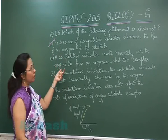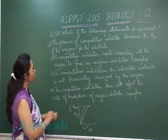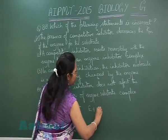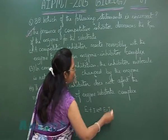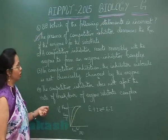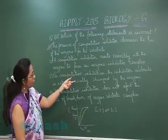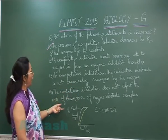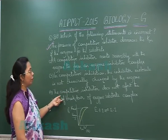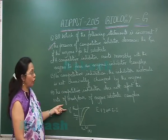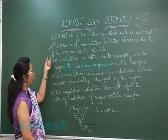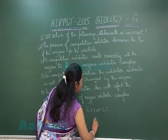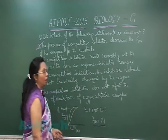The rest of the choices are correct. The competitive inhibitor reacts reversibly with the enzyme — enzyme plus inhibitor forms an enzyme-inhibitor complex, and it is reversible. The competitive inhibitor does not undergo any chemical change by the enzyme, and it does not affect the breakdown of the enzyme-substrate complex. So the only incorrect option is the first one, and the answer is 1.